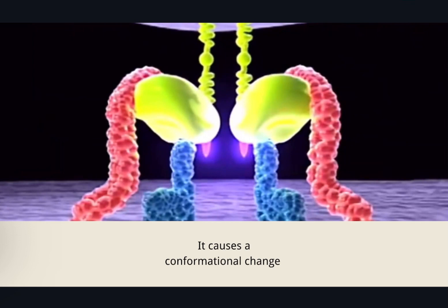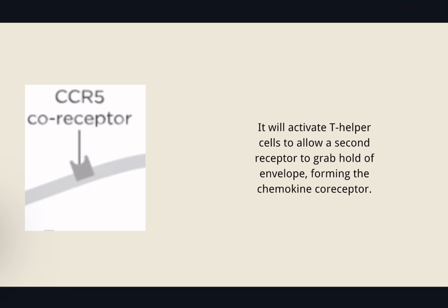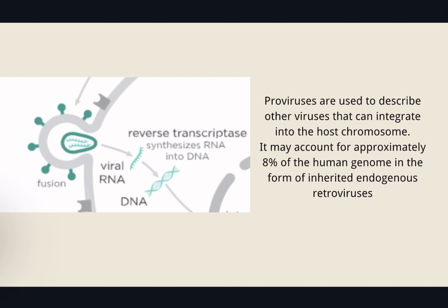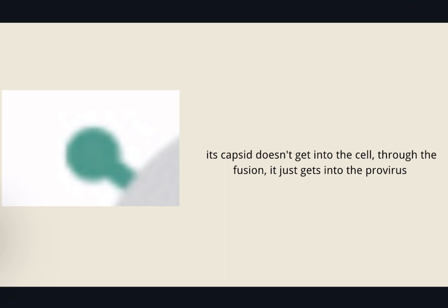The CD4 molecules define T helper cells. Then it causes a conformational change, which activates T helper cells to allow a second receptor to grab hold of the envelope, forming the chemical co-receptor. The stalk of the envelope protein pierces through from the virus into the host cell and starts to draw the two cell membranes together. Proviruses describe viruses that can integrate into the host chromosome, accounting for approximately 8% of the human genome as inherited endogenous retroviruses. Through fusion, the viral contents get into the cell.